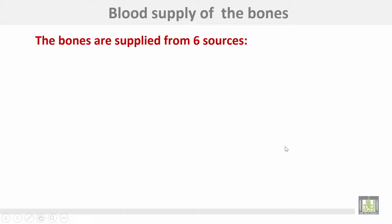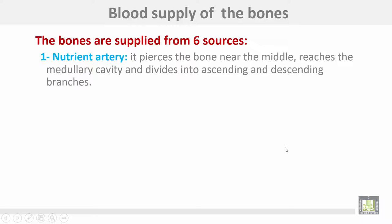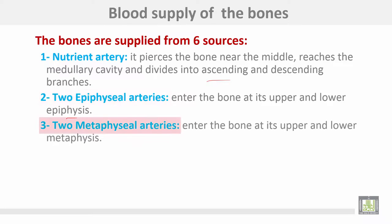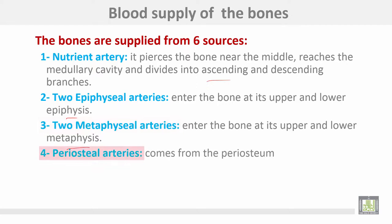The blood supply to the bones comes from six sources. Number one: the nutrient artery, which enters the bone near the middle, reaches the medullary cavity, and divides into ascending and descending branches. Two epiphyseal arteries enter the bone at its upper and lower epiphysis. Two metaphyseal arteries enter the bone at its upper and lower metaphysis. Periosteal arteries come from the periosteum.